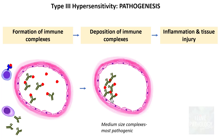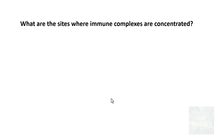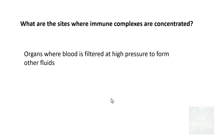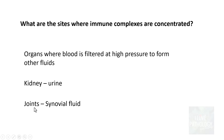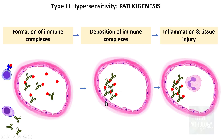These medium-sized immune complexes are deposited most frequently. The sites where immune complexes concentrate are organs where blood is filtered at high pressure to form other fluids — for example, the kidney, where blood is filtered to form urine, and joints, where synovial fluid is formed. These are the two most common sites, leading to glomerulonephritis and arthritis respectively. Immune complexes can also deposit in vessel walls, eliciting an inflammatory reaction.